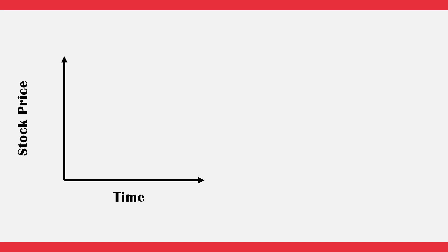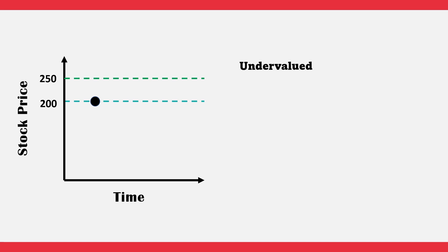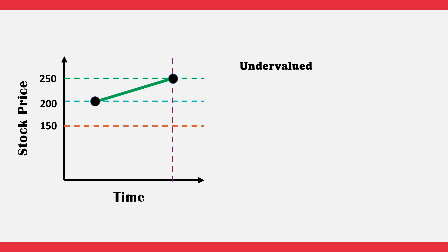Post fundamental analysis, let us say we calculated the value of the company, based on which we derived the ideal stock price. If the ideal stock price comes to be around 250, then we say that the stock is undervalued and in the near future we can expect the stock price to reach 250. However, if the ideal value comes to be around 150 instead, then we say that the stock is overvalued and can expect the stock price to come down to the levels of 150.